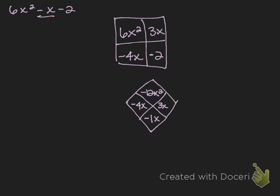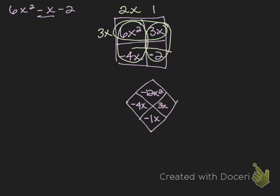Now we look for the greatest common factor in each row and column. Looking at 6x squared and negative 4x, they have a 2 and an x in common, giving 2x. Looking at 3x and negative 2, they have no common factor other than 1. Looking at 6x squared and 3x, they have 3x in common. And negative 4x and negative 2 have negative 2 in common. Checking: 2x times 3x gives 6x squared; 1 times 3x gives 3x; 2x times negative 2 gives negative 4x; and 1 times negative 2 gives negative 2. So 6x squared minus x minus 2 factors as the quantity 2x plus 1 times the quantity 3x minus 2.